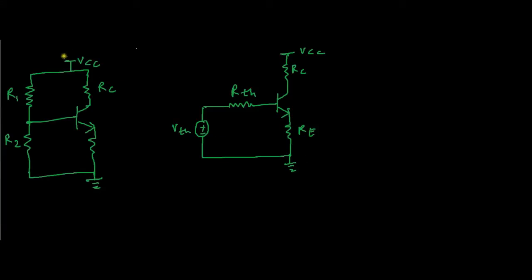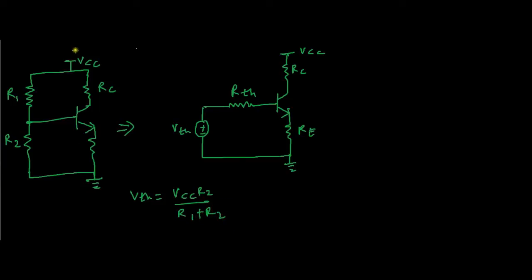This is our voltage divider bias circuit and this is the Thevenin equivalent of the circuit. Comparing these two circuits, the Thevenin voltage VTH equals VCC times R2 divided by (R1 + R2) — a simple voltage divider. And RTH becomes R1 in parallel with R2. The rest of the circuit remains the same.